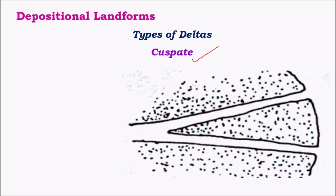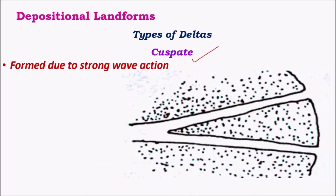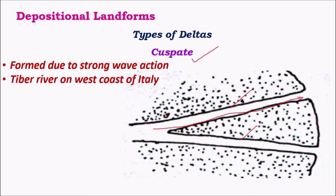The final depositional landform is the cuspate delta. During the formation of this delta, wave action or tidal action is very significant, so a lot of silt is washed away into the sea. As most silt is washed away, there are few distributaries and the coast of the distributaries appears very straight due to easy flow of water and less silt accumulation. One good example is the Tiber River on the west coast of Italy. This kind of delta is very rare in India.